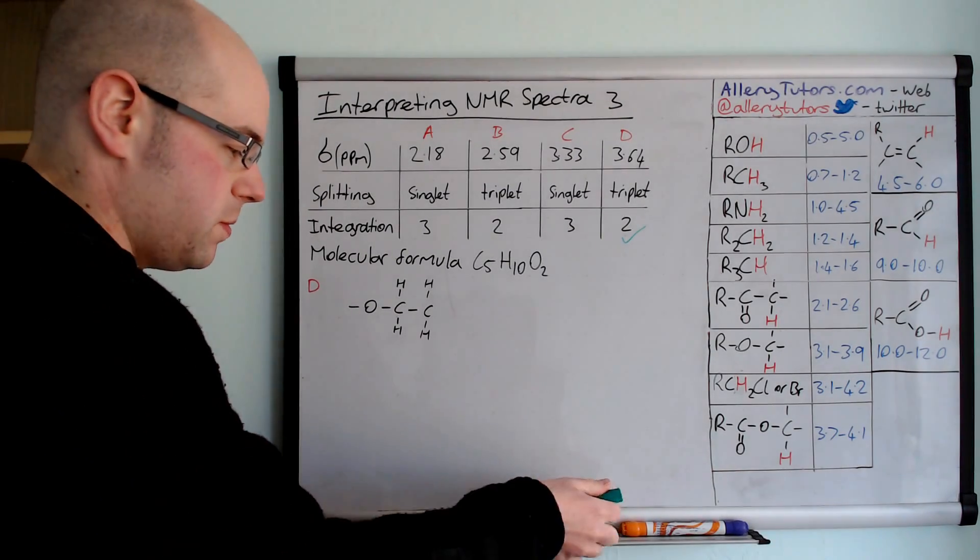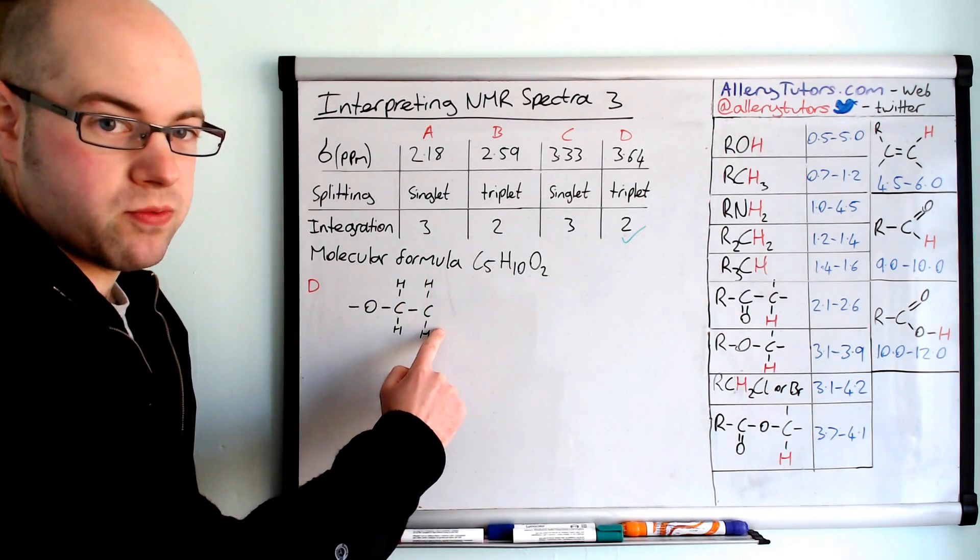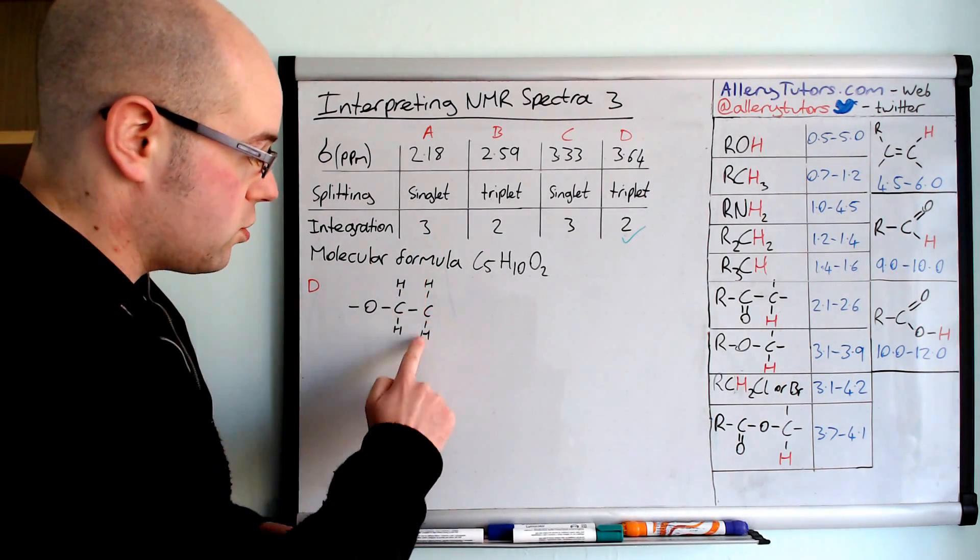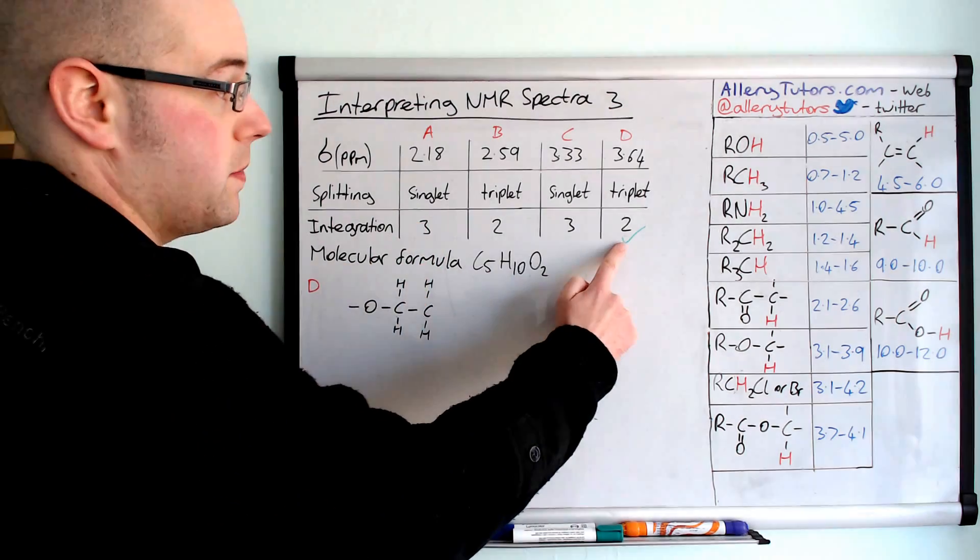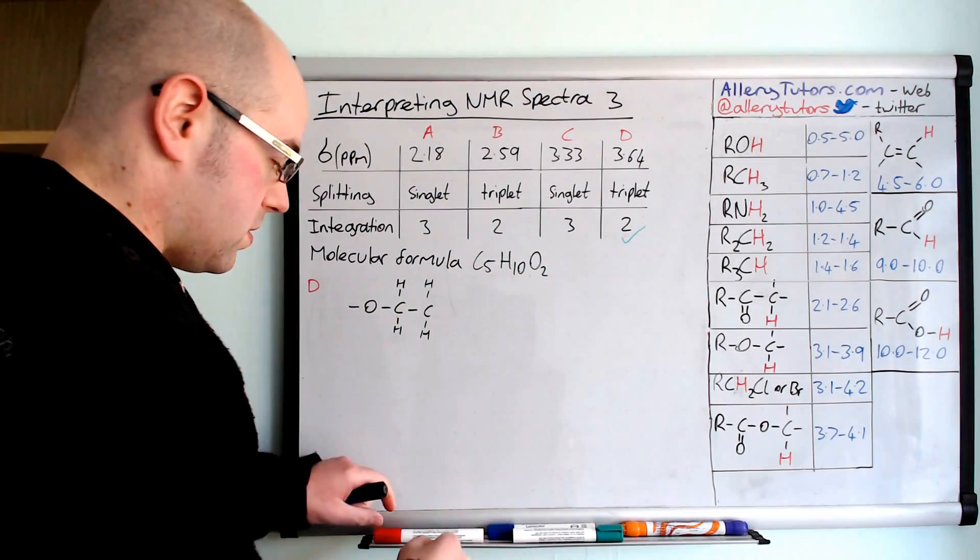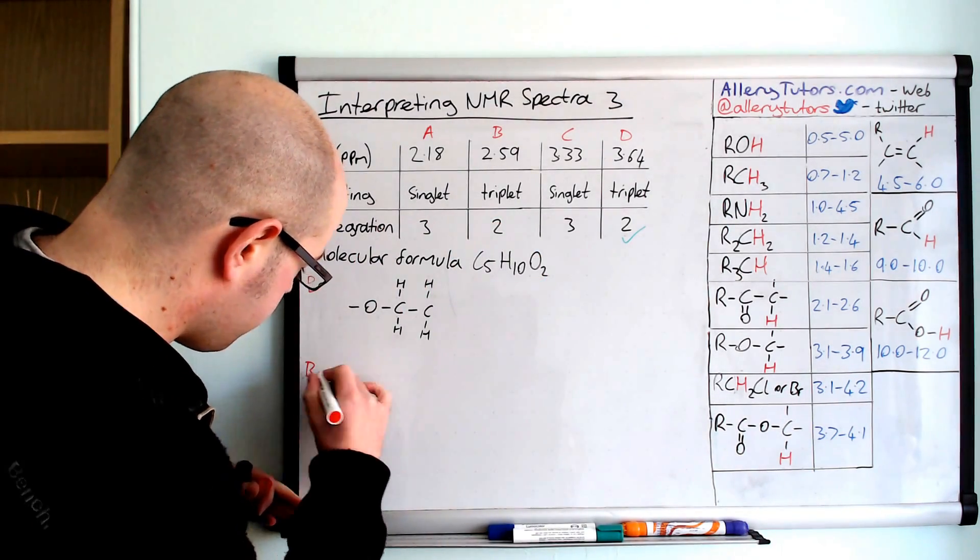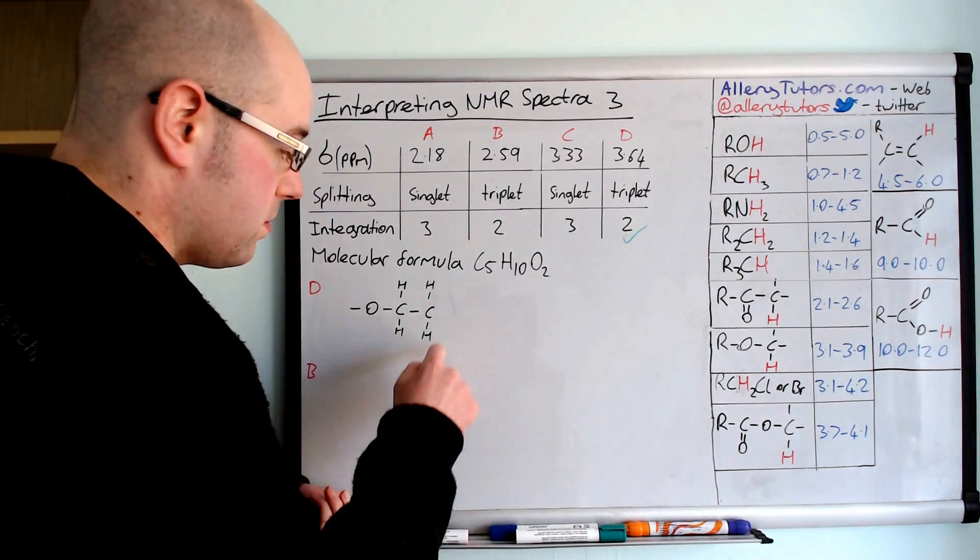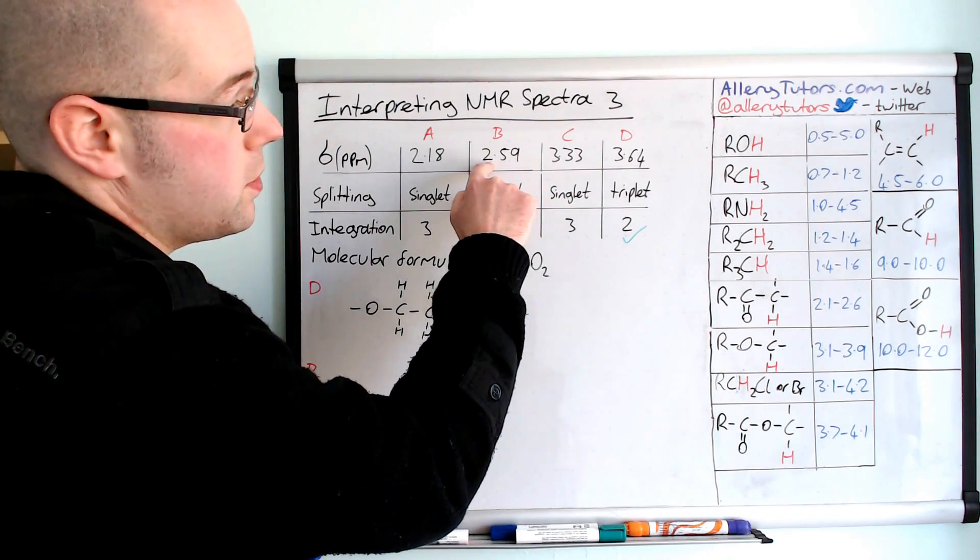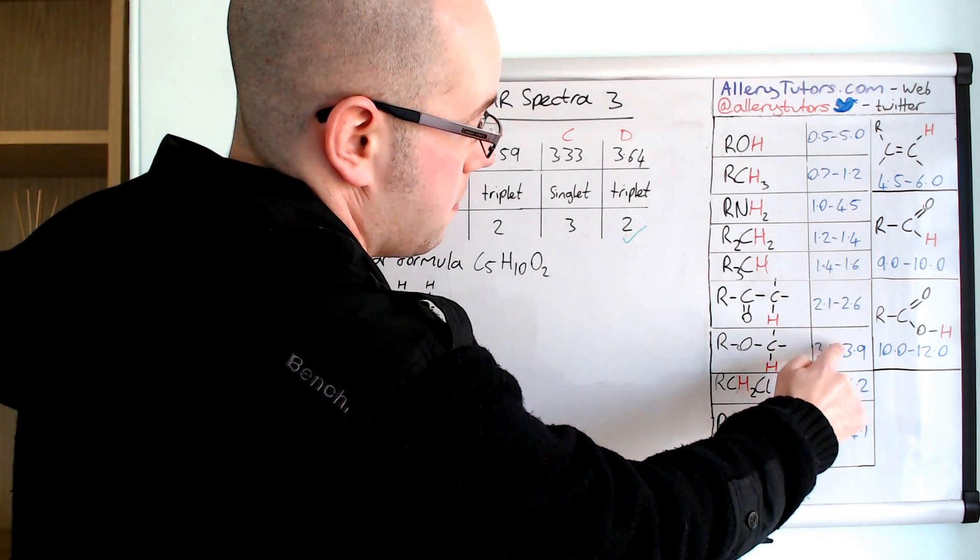The next thing which would be wise is to try and find the information for this carbon that we've just written down here, and it means we keep everything tidy. We're looking for another peak with an integration of two apart from this one. You can see there's only one other one that's left, which is this one here. So now we're going to address B. This carbon is related to B and we have a shift of 2.59. If we try and find 2.59 in here we can see it will fit in here.